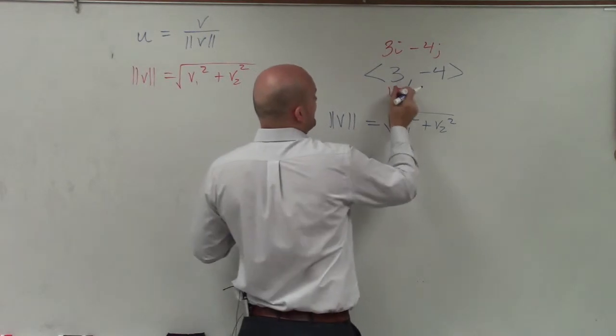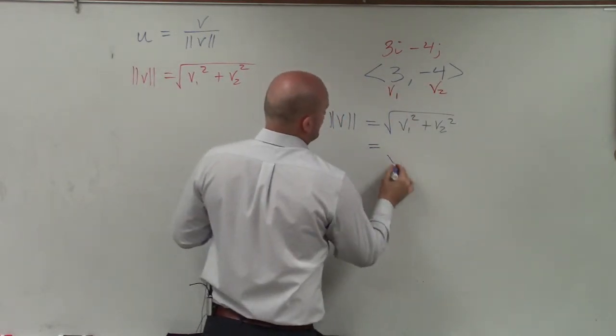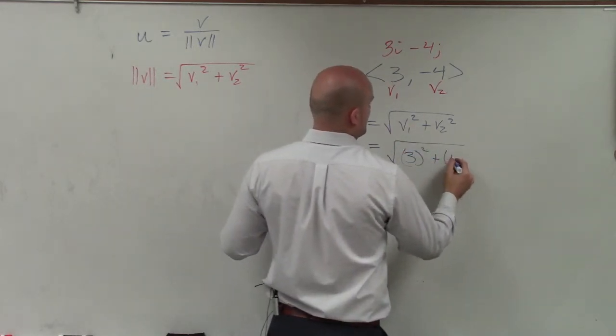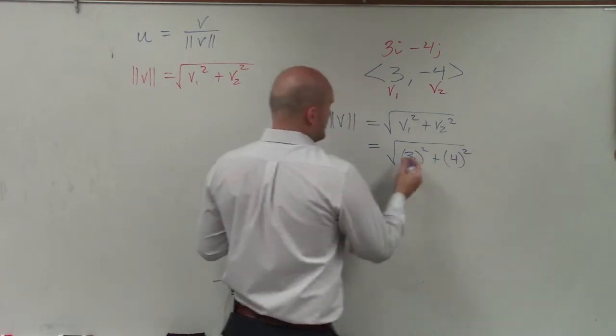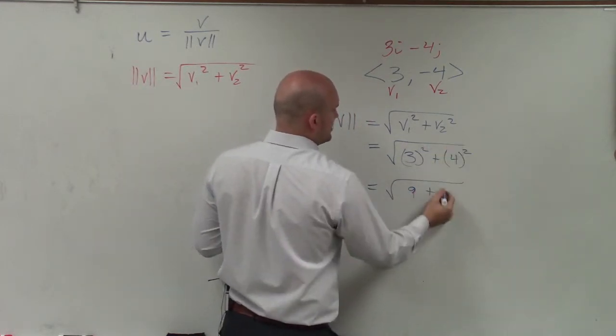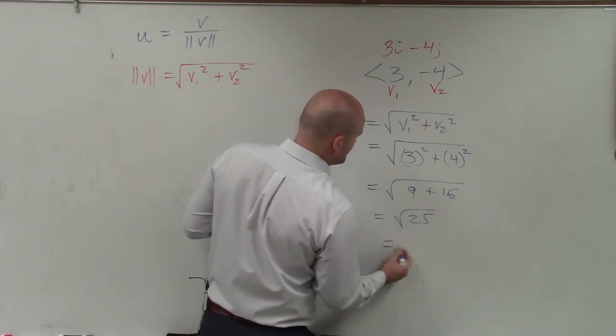The thing I like about this is that's v1 and that's v2. So now I take 3 squared plus 4 squared. 3 squared equals 9, plus 4 squared equals 16, which equals the square root of 25, which equals 5.